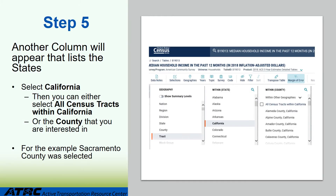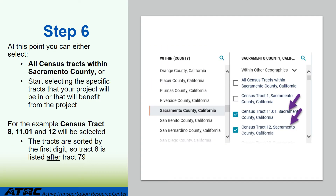Step 5: Another column will appear that lists the states. Select California. Then you can either select all census tracts within California or the county that you are interested in — for the example, Sacramento County. You can either select all census tracts within Sacramento County or start selecting the specific tracts that your project will be in or that will benefit from the project.